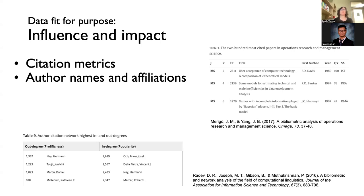For this type of analysis, we might look at citation metrics — how many times different works in our collection have been cited — or we might calculate network statistics like degree centrality or betweenness centrality. These are social network statistics that we can use to understand the influence of particular actors in a network, in this case authors in a co-authorship network, and their importance in generating research on a topic.